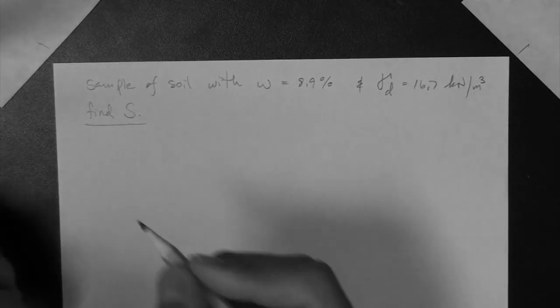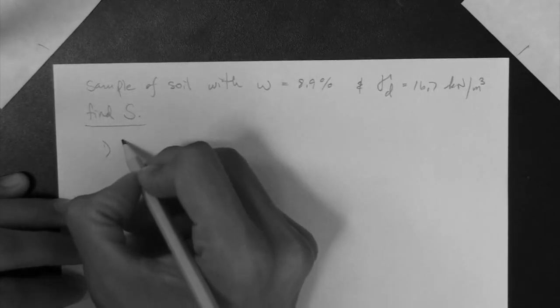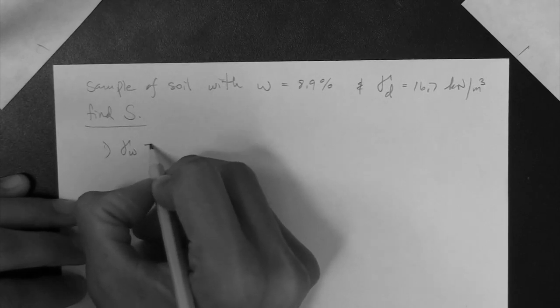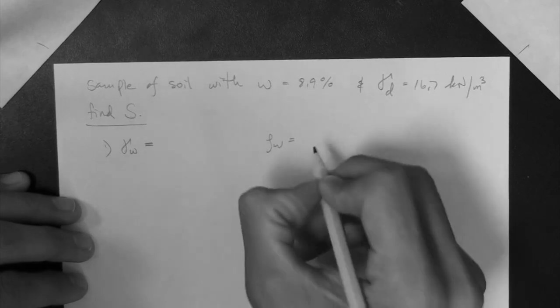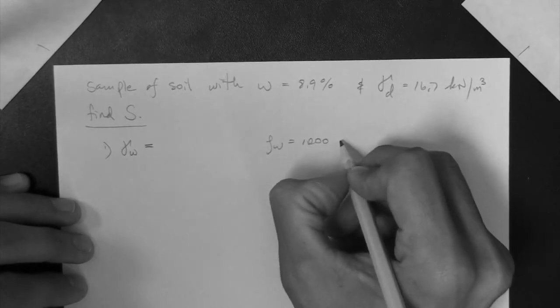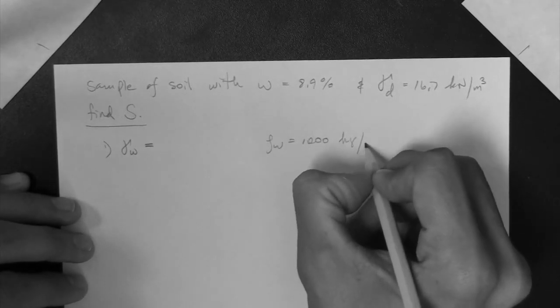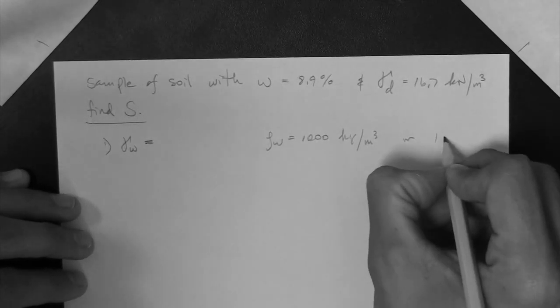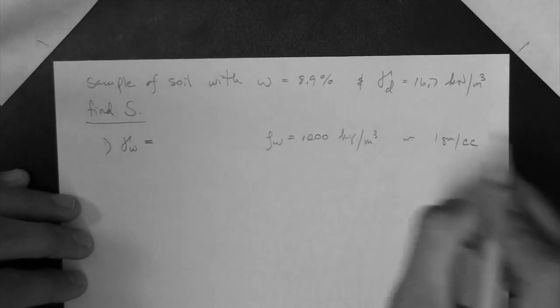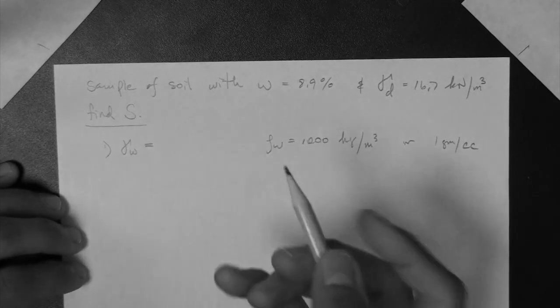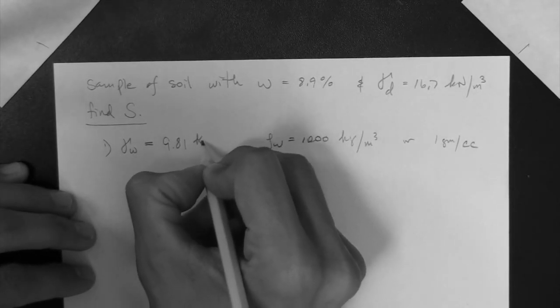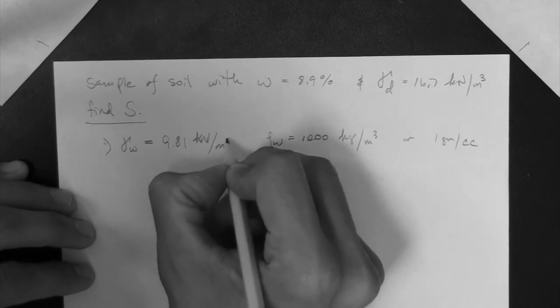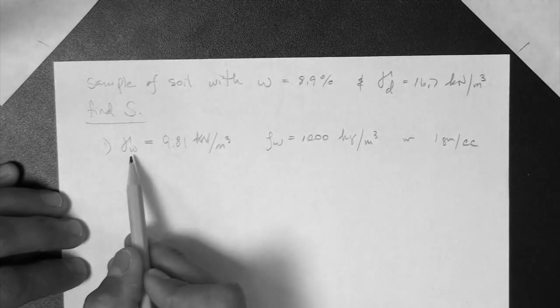Alright, so let's begin. First thing is that we know that raw water is a thousand kilograms per meter cubed, or one gram per cc, right? And we also know that the unit weight is 9.81 kN per meter cubed. That's the unit weight of water.